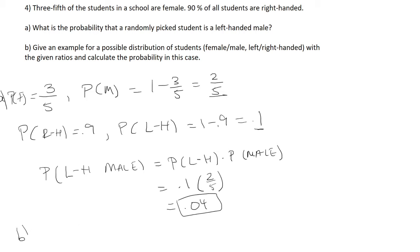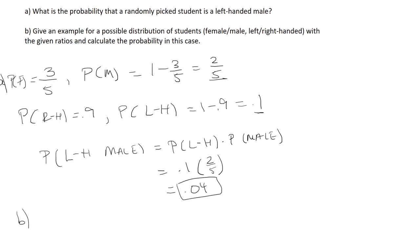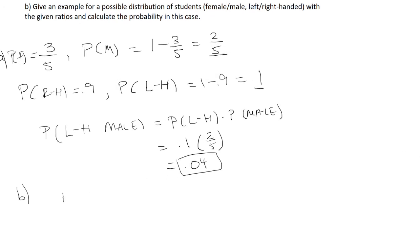Now for part B, we want to give an example for possible distribution of students. So we want to take into account all the possible combinations.